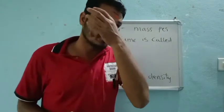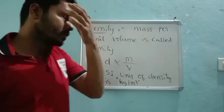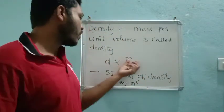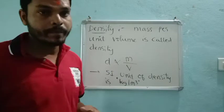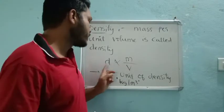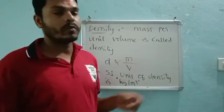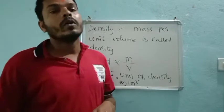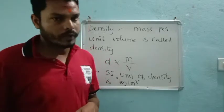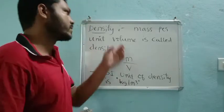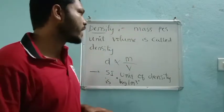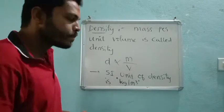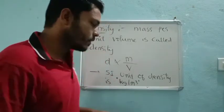Density is very important for solving density problems in second year. This is the common formula for density: D is directly proportional to mass and inversely proportional to volume. Or, with respect to the definition: mass per unit volume is called density.